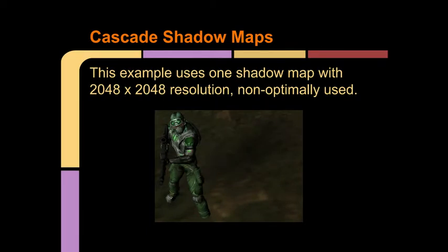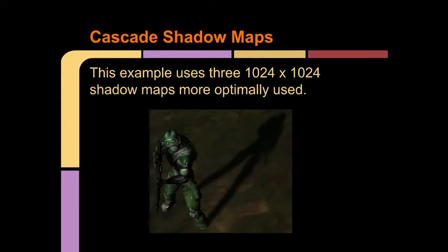Here we see a model casting a shadow from a directional light. The shadow map being used is 2048 by 2048 in size. While that is fairly large, the texture space is not being used very efficiently and the resulting shadows are of very low quality and can almost not be seen. Here we have the same scene but instead of using one 2048 by 2048 texture, we use three 1024 by 1024 textures whose space is used more efficiently. The results are obviously a large improvement for shadow quality.